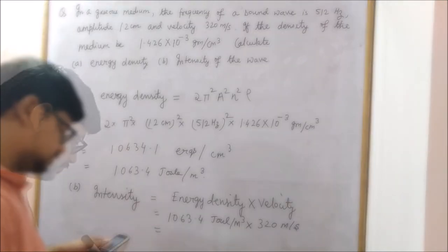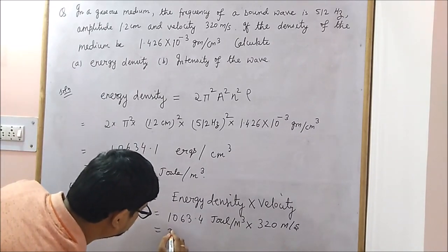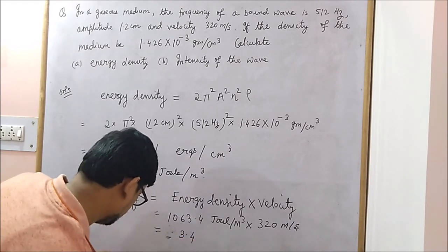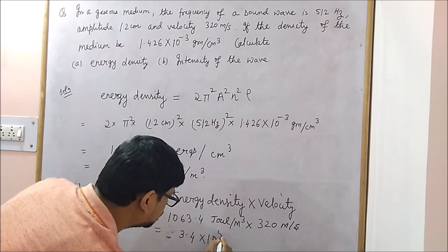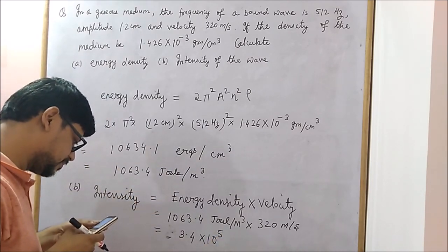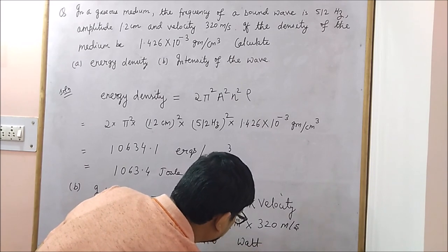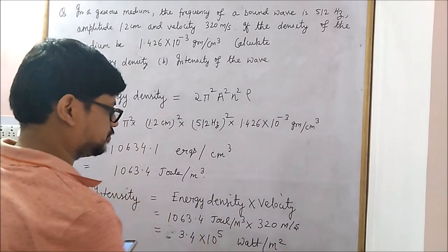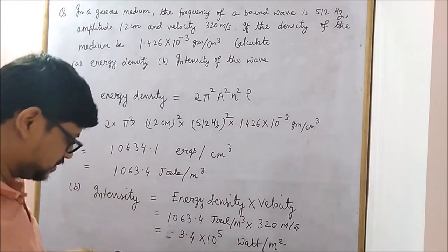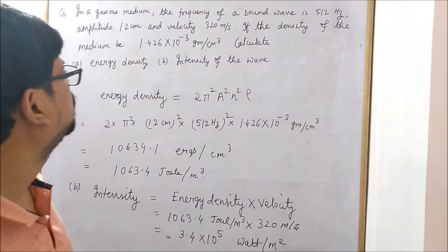Calculating the intensity, we find it is equal to 3.4 into 10 to the power 5 watt per meter square. The unit comes out as watt per meter square. So this is the intensity of the wave.